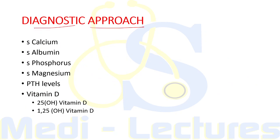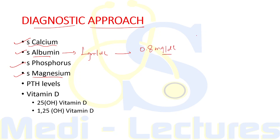In the diagnostic approach, in addition to measuring serum calcium, it is also important to measure serum albumin, serum phosphorus, and serum magnesium. A decrease in serum albumin leads to hypocalcemia — each 1 gram per deciliter decrease in albumin leads to a 0.8 mg/dL decrease in calcium, so we must calculate the corrected calcium. Hyperphosphatemia can consume calcium, and hypomagnesemia can lead to reduced parathyroid gland function.